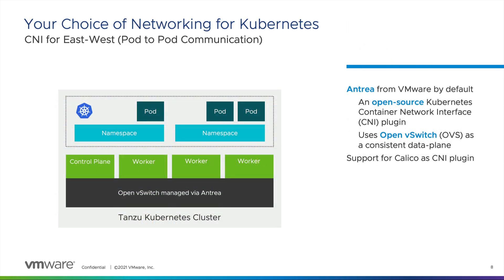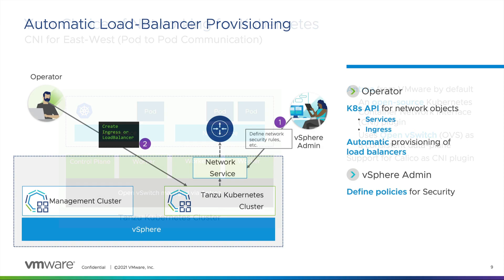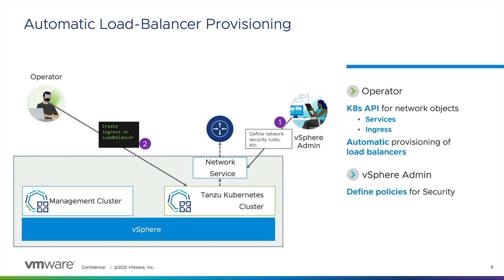By default, Antrea is the preferred container networking interface plugin that will take care of east and west networking traffic between the containers and pods within Kubernetes. Antrea uses Open vSwitch technology as a consistent data plane, but if needed, Calico is supported as a plugin. If a Kubernetes operator requests a service of type load balancer, one will be provided through Tanzu Kubernetes Grid's integrations with either NSX Advanced Load Balancer, NSX-T, or HA Proxy. This process is completely automatic and will perform all the necessary operations of talking to the load balancer service or the controller, provisioning a load balancer, and then tying it back to the Kubernetes service that was deployed.